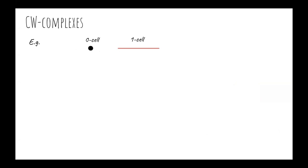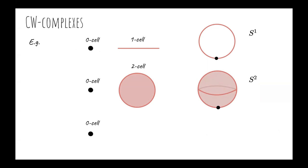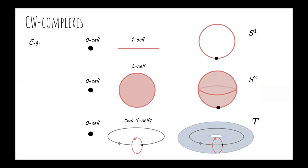For instance, we'll start with a point or a zero cell. If you attach one cell, you obtain a circle. But if you attach two cells, you will obtain a sphere. Now, if you start with a point, you attach two cells of dimension one and then a cell of dimension two using this attaching map, you will obtain a torus. Notice that different attaching maps may give rise to different topologies.